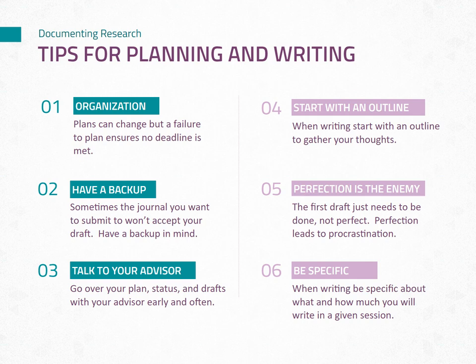Start with an outline: begin your writing process by creating an outline that structures the flow of your publication. This will provide a clear roadmap and help you stay focused on key points and main arguments. Embrace imperfection: don't get caught up in perfecting each sentence during the initial writing stage. Focus on getting your ideas and results on paper first, then refine and edit them. Remember that feedback and revisions are a normal part of the publication process. Be specific with writing time: set specific and measurable goals for your writing sessions. Break down tasks into smaller, manageable chunks, and use dedicated, uninterrupted time slots to maximize productivity.